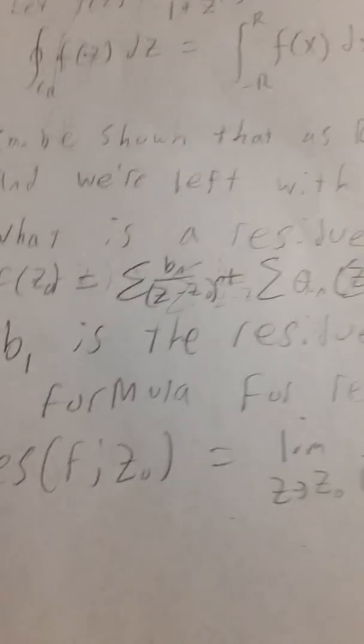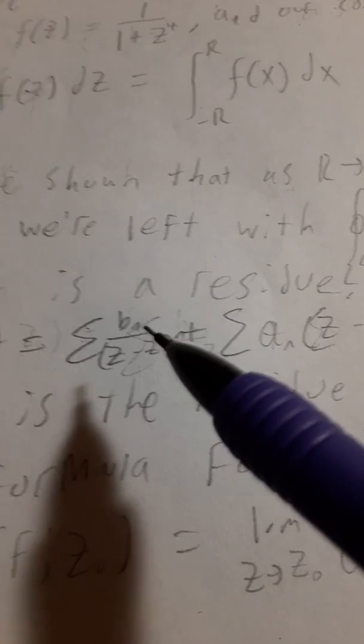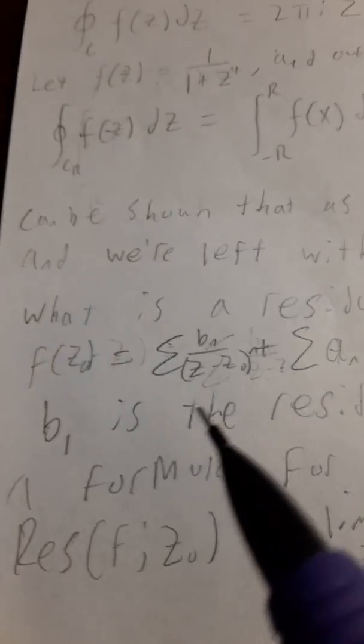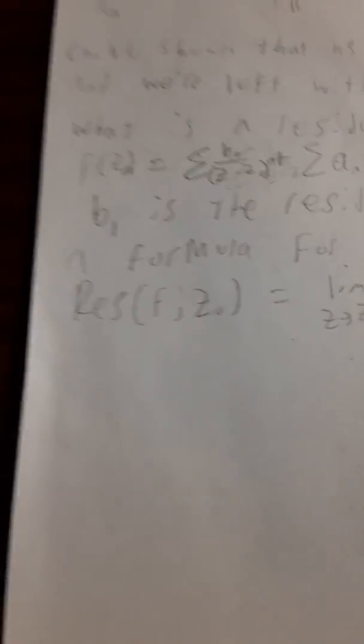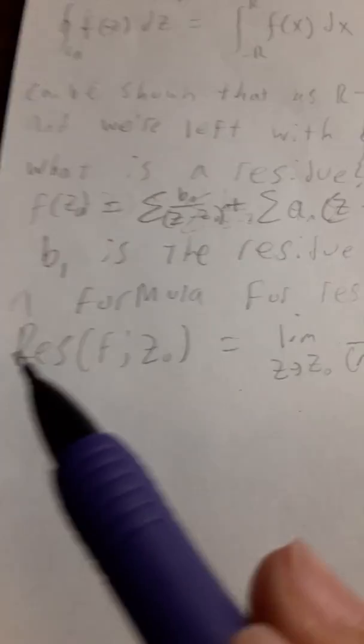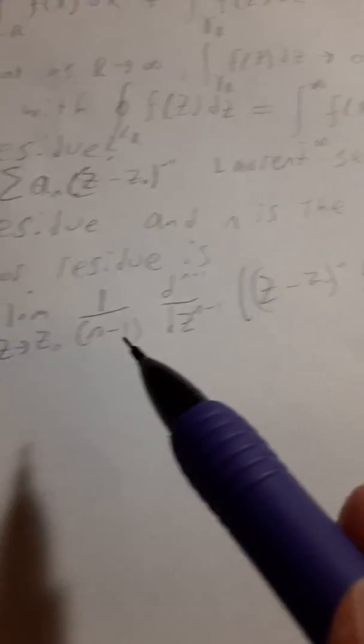Now we basically need to compute the residues. What is the residue? It is the first coefficient term — this b₁ right here. It's kind of hard to explain, but it's just this b₁. And n is the order of the pole. What is a pole? It's when the denominator equals 0. Here's a nice formula for the residue — it's this limit right here.